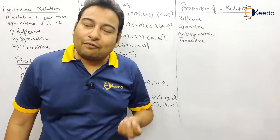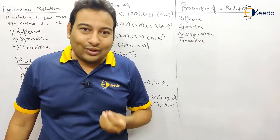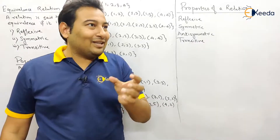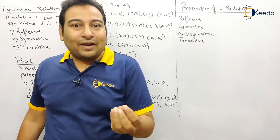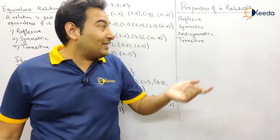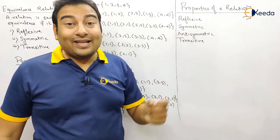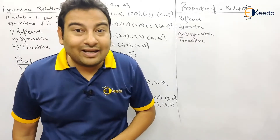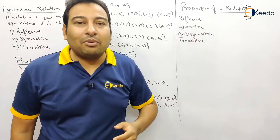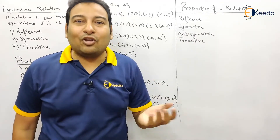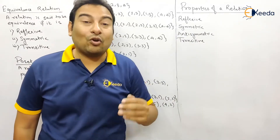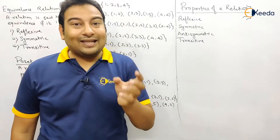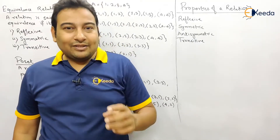The definition of reflexive: (a, a) belongs to R for all a in A — that means for reflexive, all self-elements must be present. For symmetric: if (a, b) belongs to R then (b, a) belongs to R.